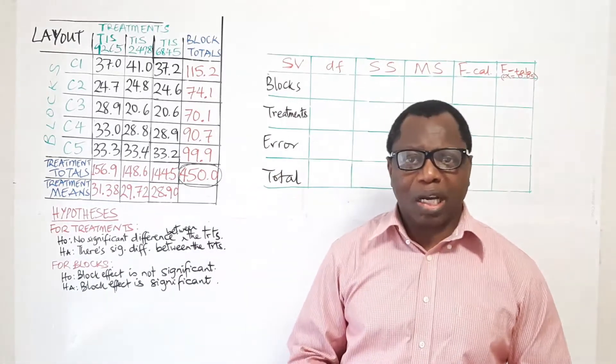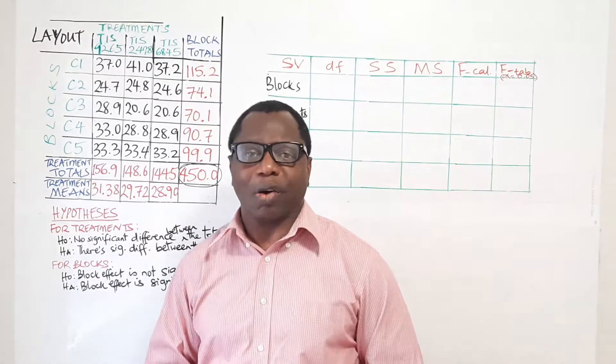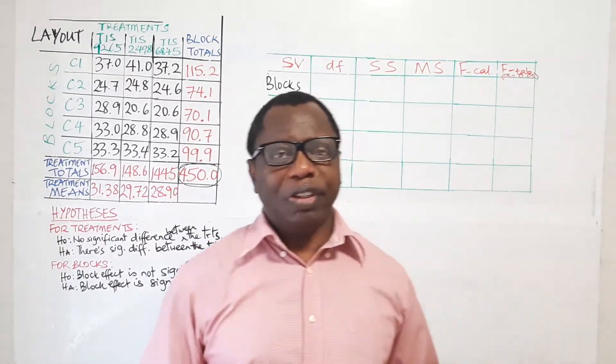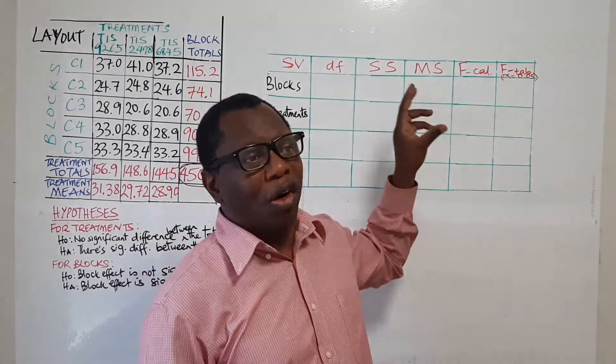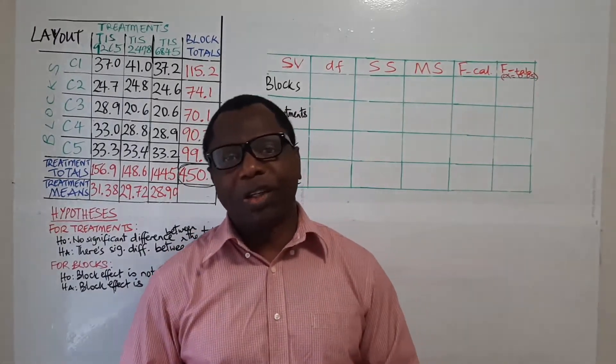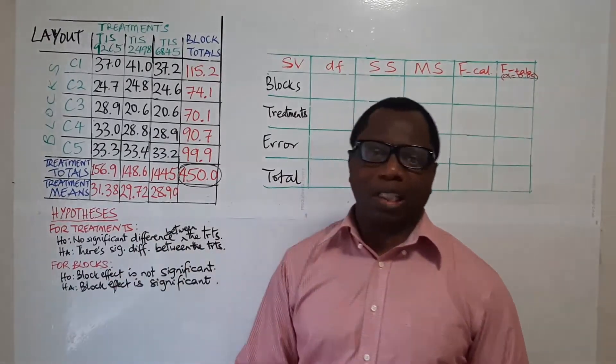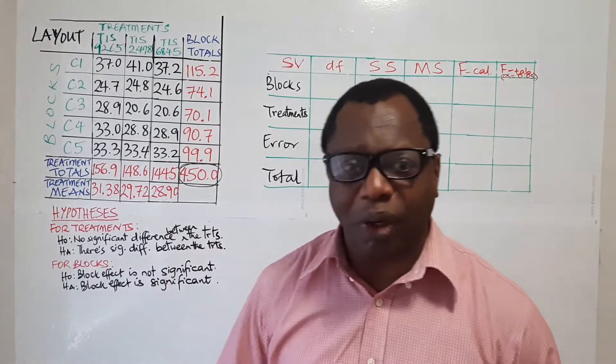We computed the correction factor, the sum of squares total, the SS treatments, SS blocks and SS error. So in this video we'll be focusing on the ANOVA table which is the last stage of computations before we take decisions on our hypothesis. And so let's get going right away.